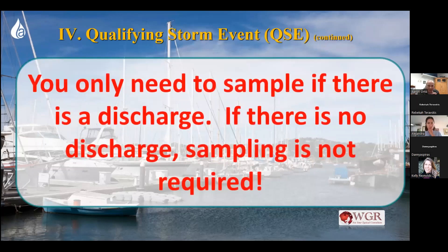You only need to collect a sample if there's a discharge — water or fluid leaving your property. If there is no discharge, sampling is not required. This is a surface waters permit, which means water leaving your property, discharging off your property either through a drain or directly off your property to a surface water in the United States.